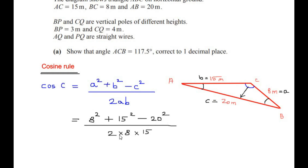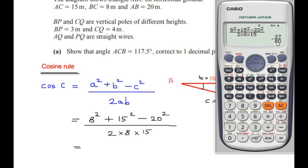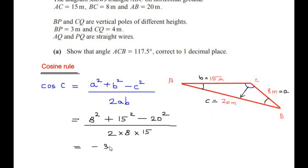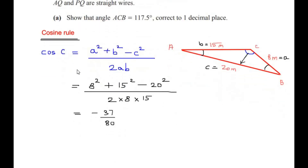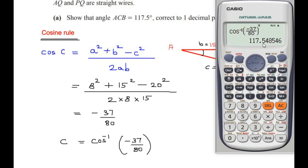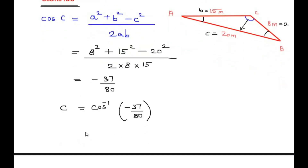Substituting the values into the formula: (8² + 15² − 20²) / (2 × 8 × 15), this gives us −37/80. To find angle C, we take the inverse cosine: cos⁻¹(−37/80), which gives 117.548 degrees. Correct to one decimal place, angle ACB = 117.5 degrees, found using the cosine rule.